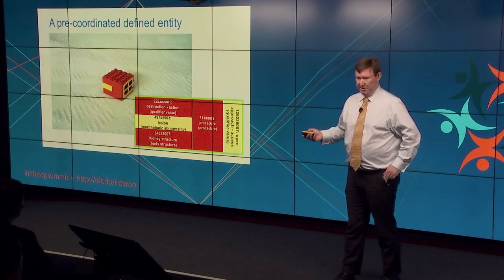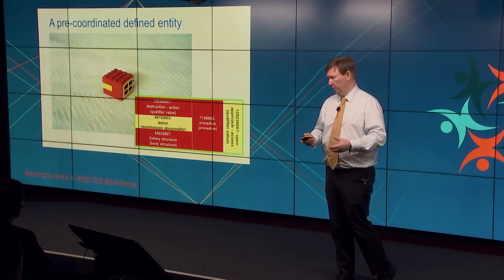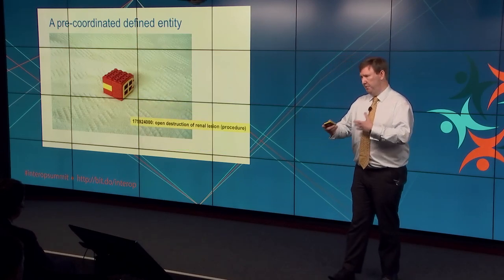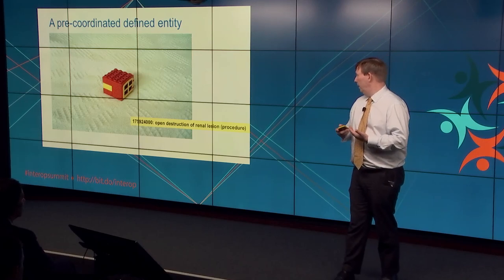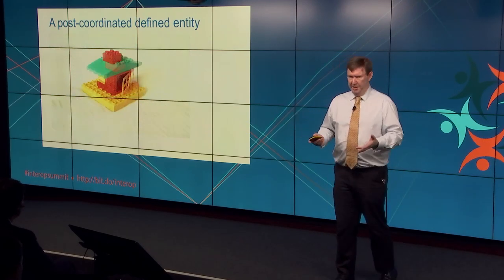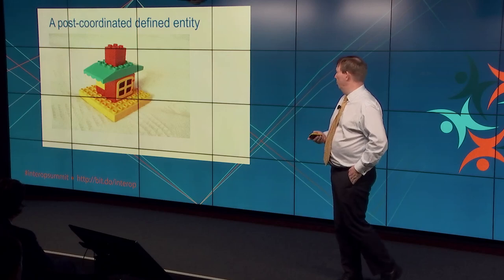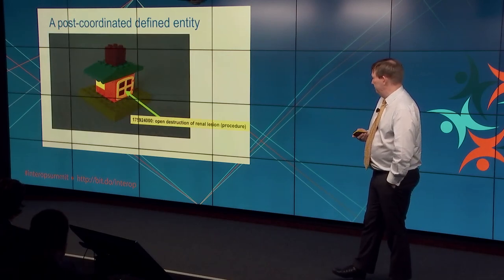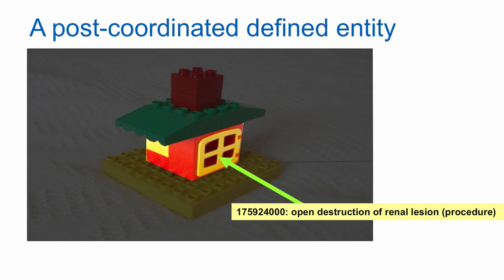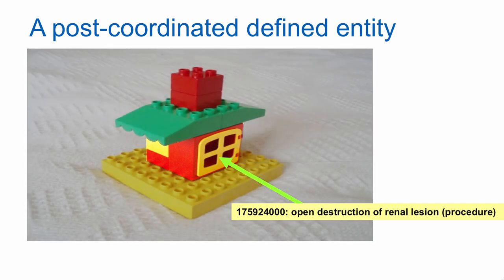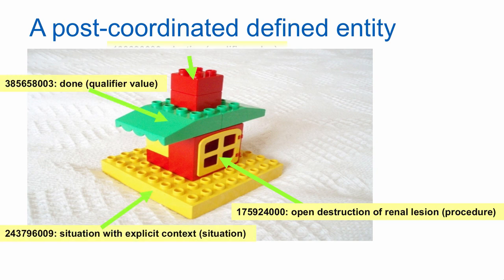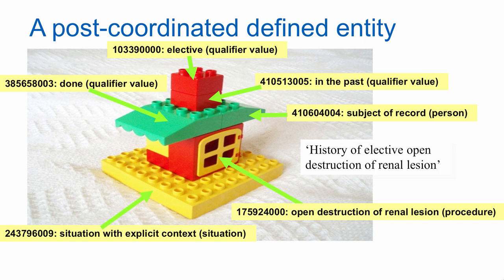In some cases SNOMED will say it already has an identifier for that particular model, and those two representations are interchangeable. I can take either the unique identifier that I get back from SNOMED, or the richer decomposed version, and put that into something even more complicated. So we've got our open destruction of renal lesion — either the unique identifier or the decomposed expression — and we've put it on a platform saying there's a situation involving this, it's been done in the past, electively not urgently, to this patient not their mother. That doesn't exist in SNOMED as a single code.